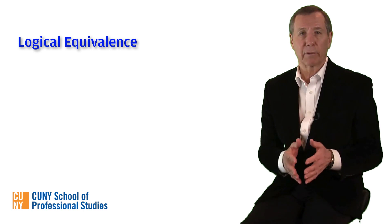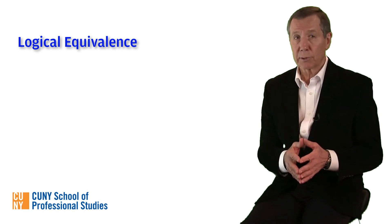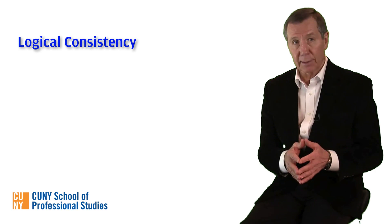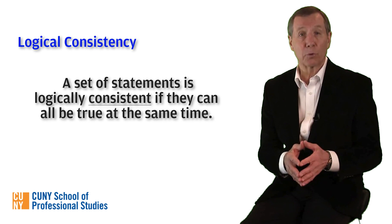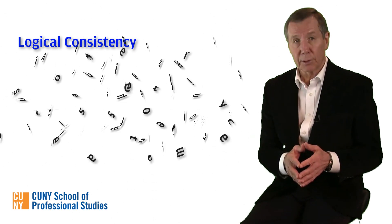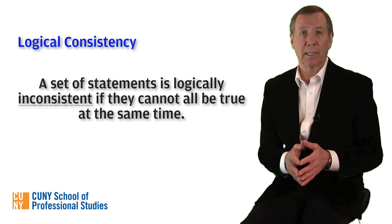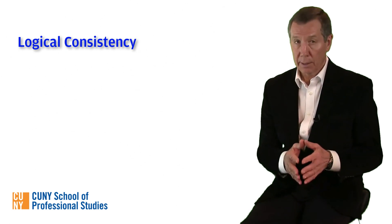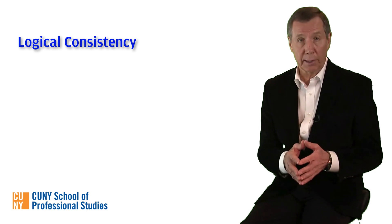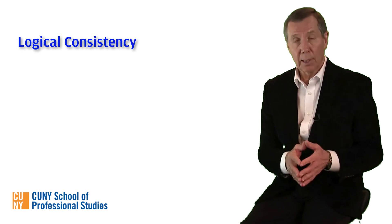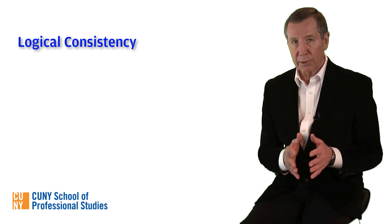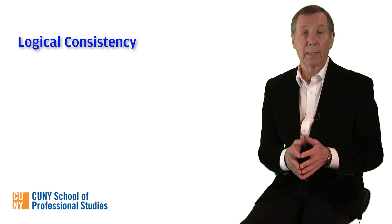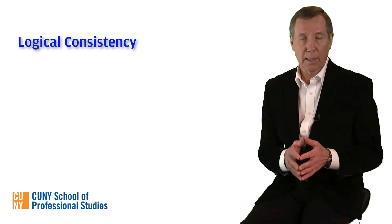In addition to logical equivalence, truth tables can also disclose whether or not a set of sentences is mutually consistent — that is, whether or not a set of sentences can all be true at the same time. A set of sentences is logically inconsistent if they cannot all be true at the same time. This is important because the sentences we use in our arguments should be capable of being true simultaneously, otherwise we'd be using premises that could contradict each other. Logical consistency guarantees that our sentences will be contradiction-free.